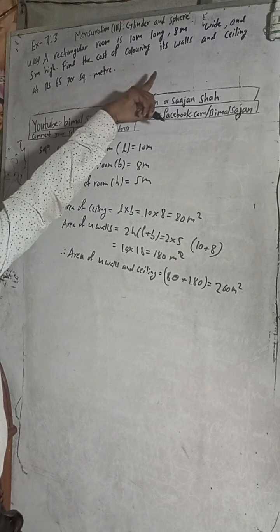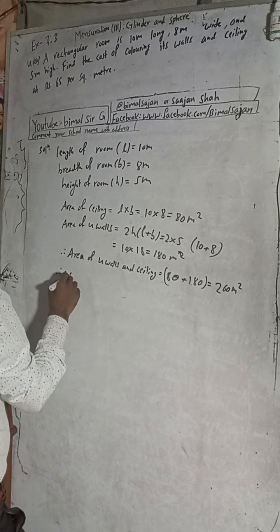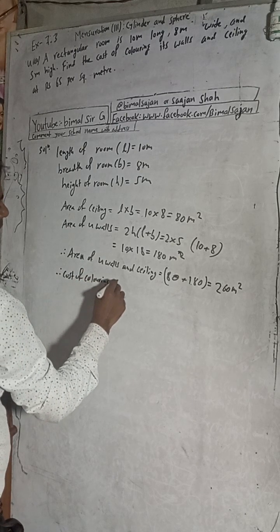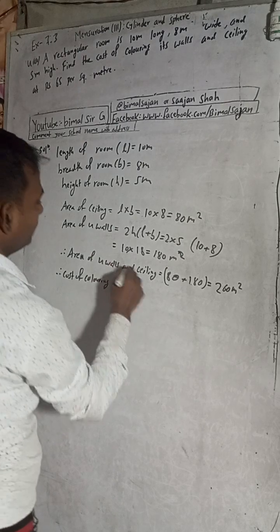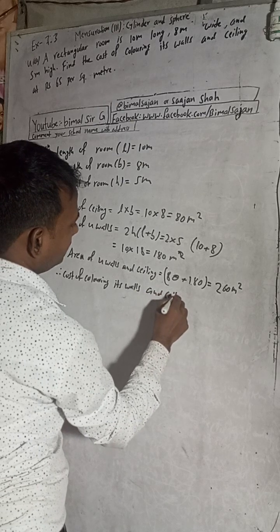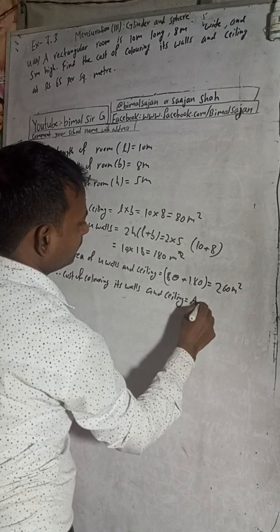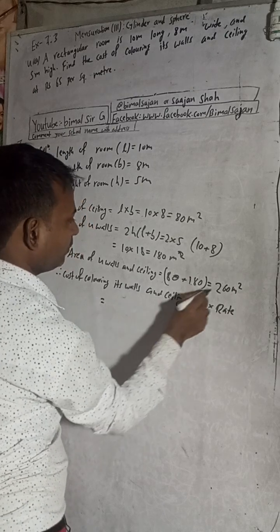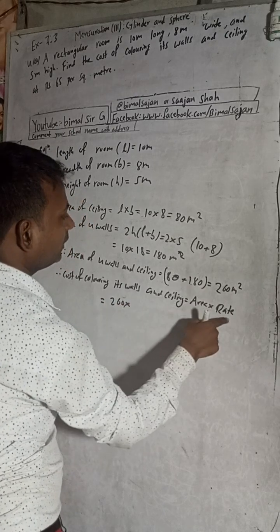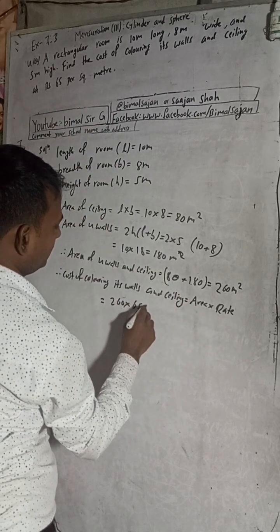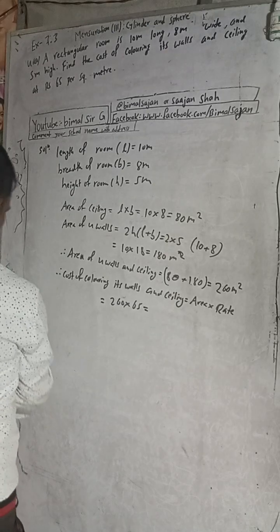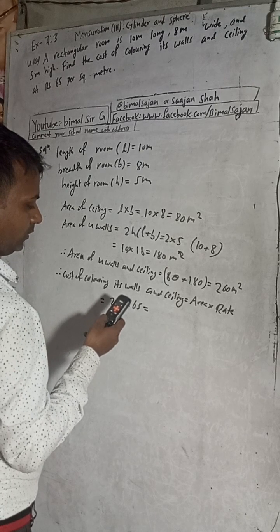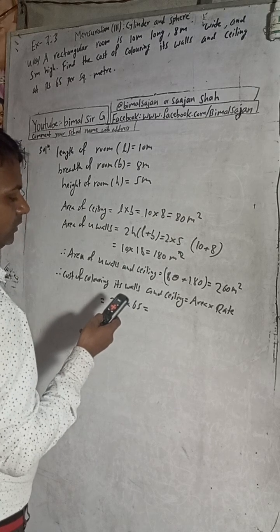Now find the cost of coloring. Cost of coloring the 4 walls and ceiling is equal to area into rate of cost. Area is 260 square meters and the rate is Rs 65 per square meter. So 260 into 65 equals Rs 16,900.